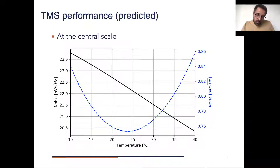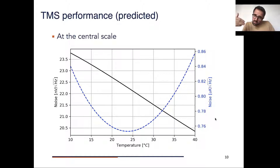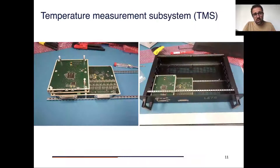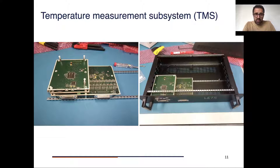Here I show some expected performance on the central scale from the three scales we have. You can see that when centered around 25 degrees, we will be achieving performance below one micro Kelvin per root Hertz, as expected. You can also see some pictures of these boards already built, implemented, and being integrated in our lab ready for testing in the coming weeks.